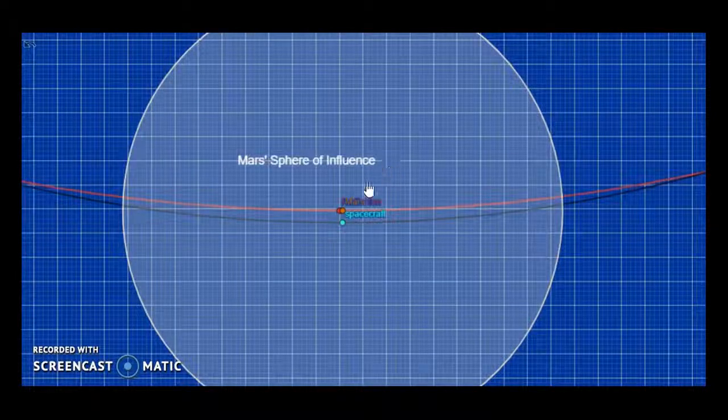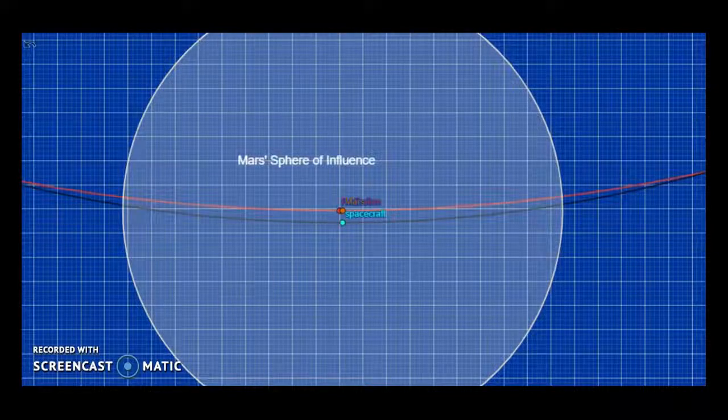In Mars' sphere of influence, we have to change our orbit from a hyperbolic one to a parabolic one.